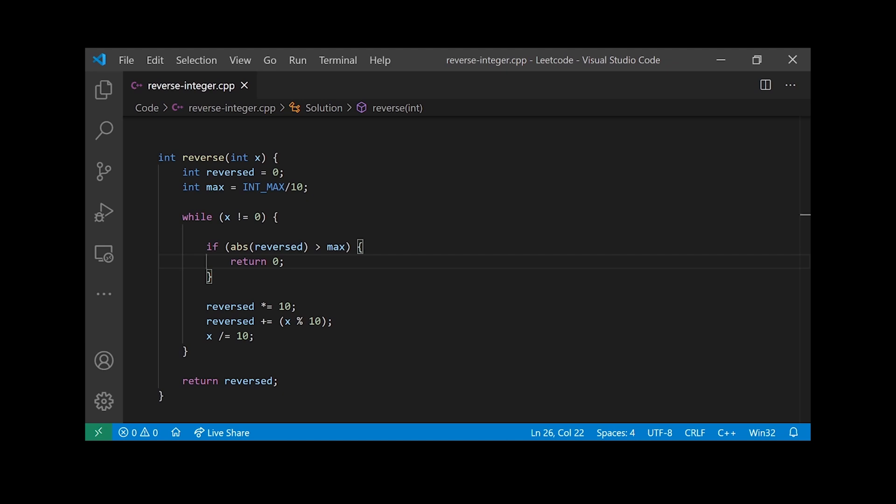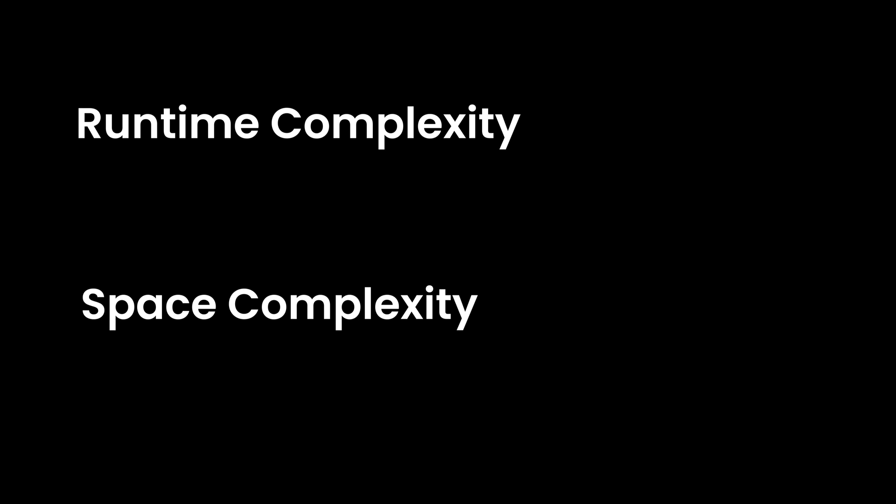Now let's analyze the space and runtime complexity. We have a while loop that goes through each digit, which scales linearly based on the number of digits in the given integer — therefore our runtime complexity is O(n). For space complexity, we store all the digits in the reversed integer, which also scales linearly as the input grows. Therefore, our space complexity is also O(n).